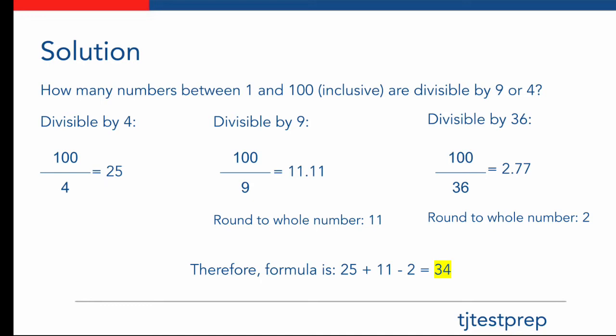Next, in order to account for any duplicates that we found in finding the ones divisible by 4 and 9, we divided by 36, because that is the first number in which it is divisible by both 9 and 4. Here we got 100 divided by 36, which gave us 2. Adding up how many numbers were divisible by 4, 25 plus 11 minus 2 gave us our final answer of 34.